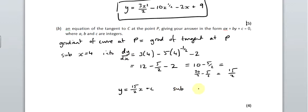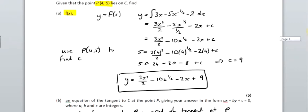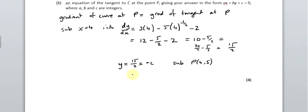So that's our gradient, which means we can write y equals 15 over 2 x plus C. Now we're going to substitute our point P in again. It's got quite a bit of a workout, this question, hasn't it? Which is (4, 5) if I remember rightly. Let's just go back up and check that. Yes, it is (4, 5).